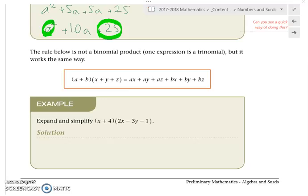2x squared minus 3xy plus 7x plus 12y minus 4. That sounds better. That's what I got! Excellent.